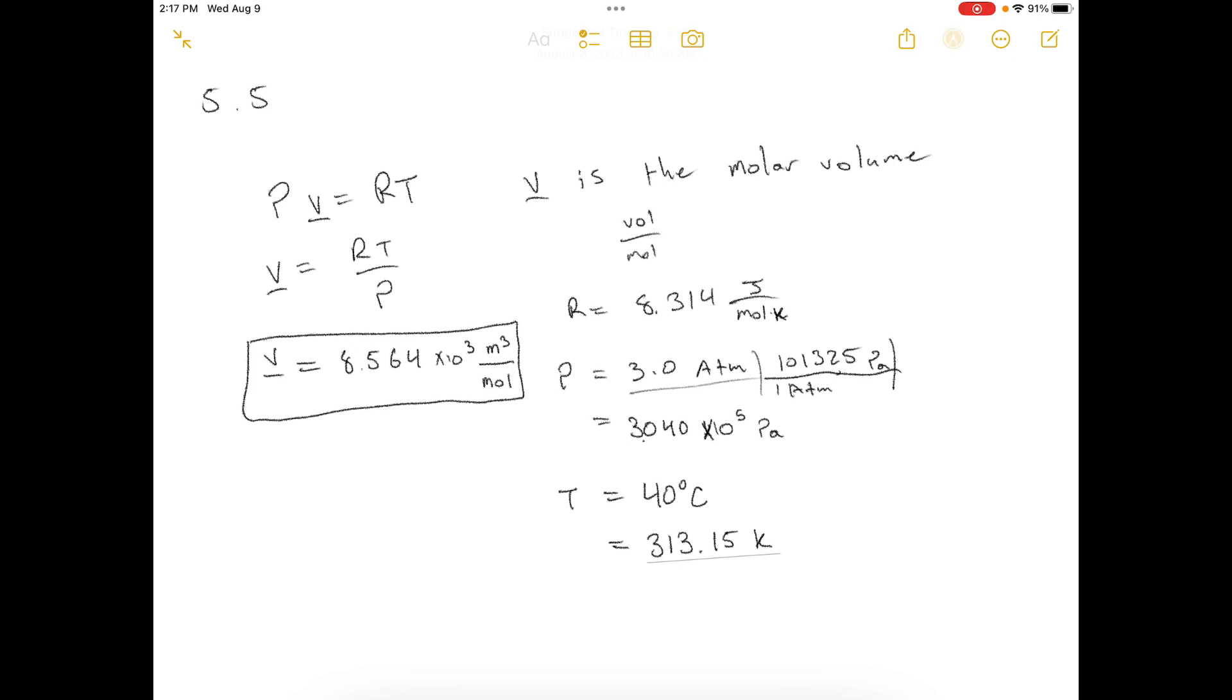The ideal gas equation of state is this equation right here. V with a little bar underneath stands for the molar volume. That's volume divided by moles.